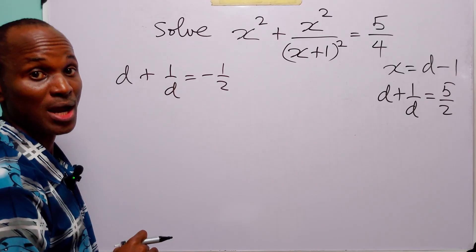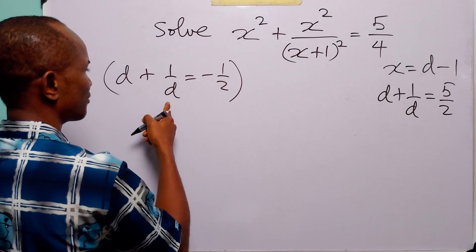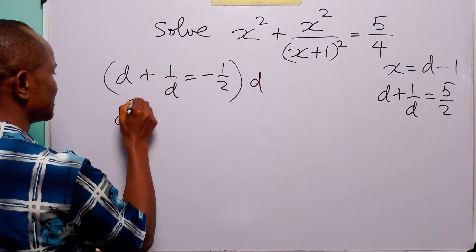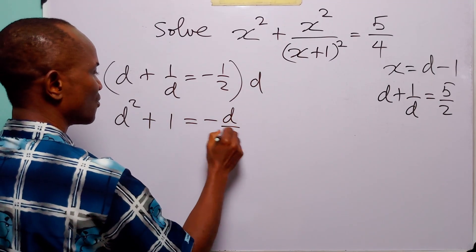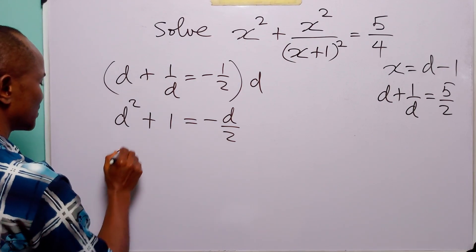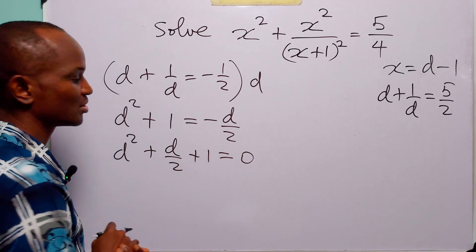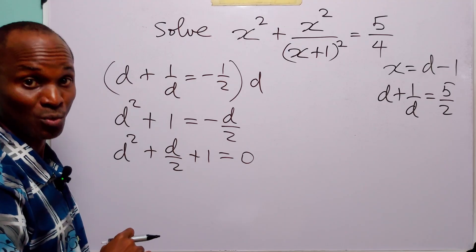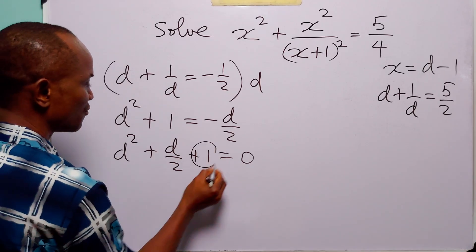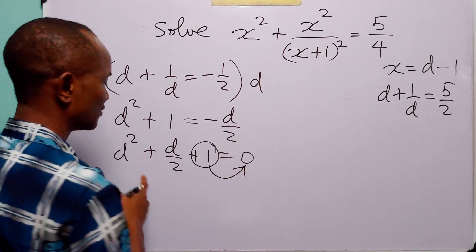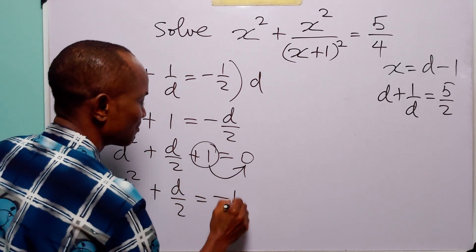In the first case, d plus 1 over d equals minus half. To get rid of the fraction we multiply through by d: d times d is d squared, 1 over d times d is 1, and minus half times d is minus d over 2. Rearranging, we have d squared plus d over 2 plus 1 equals 0. We cannot factorize this, so we will solve by completing the square. First we move the constant to the right: d squared plus d over 2 equals minus 1.